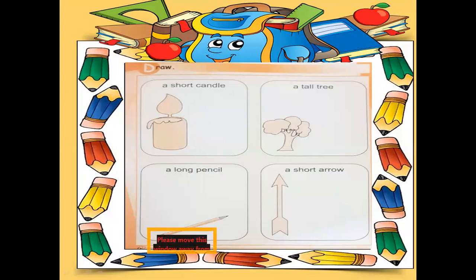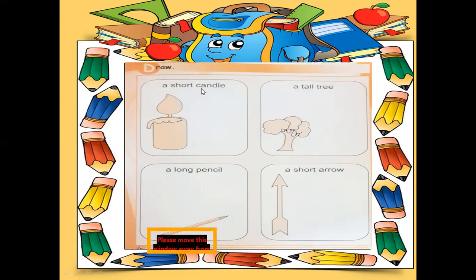This is your Gaba Math book page number 73. We have already done this page, but we are doing it again to revise and clear your concepts about short and tall. So first of all, open your Gaba Math book page number 73. In this page they say: draw a short candle, a tall tree, a long pencil, and a short arrow.